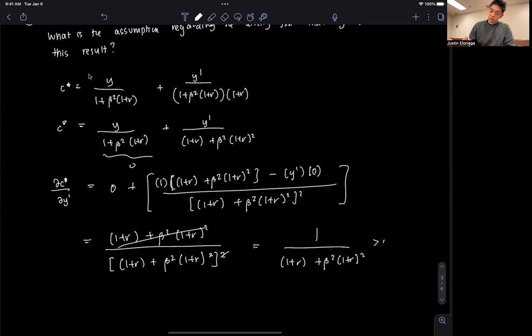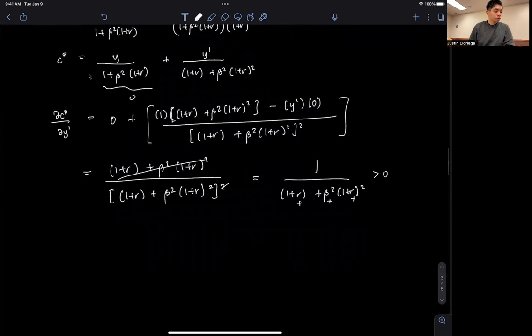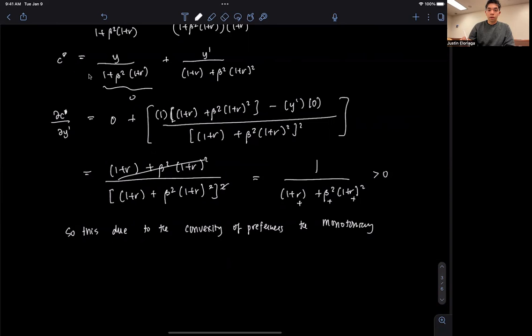And of course, this is greater than 0, because r is positive, beta is positive. So that is true. This is due to the convexity of preferences, and also the monotonicity of preferences.